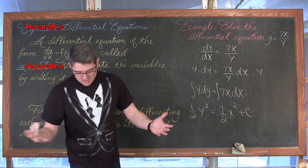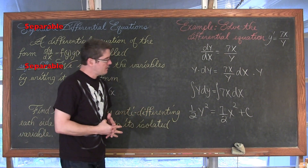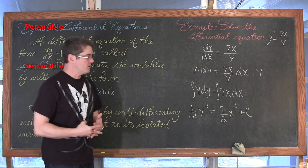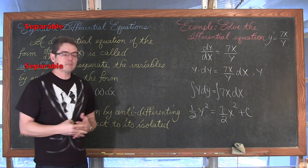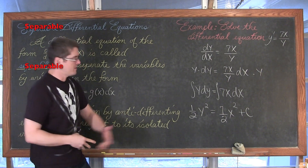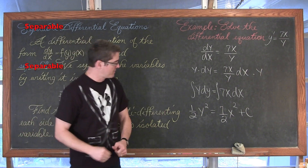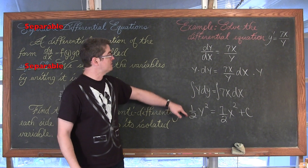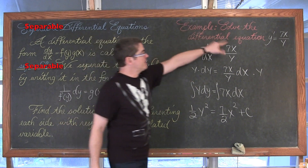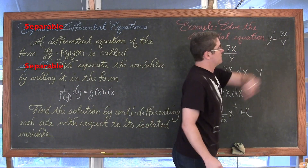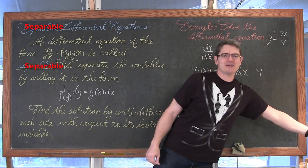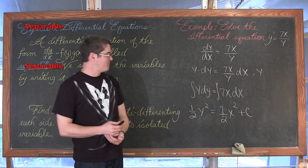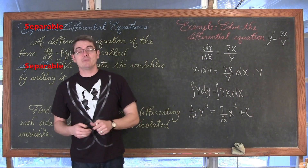Depending on the format your teacher wants, if they are not concerned about simplifying, then (1/2)y² = (7/2)x² + c is the answer. This is the solution to this differential equation. So that was quick. Let's go to the last example, which will be quite a bit harder.